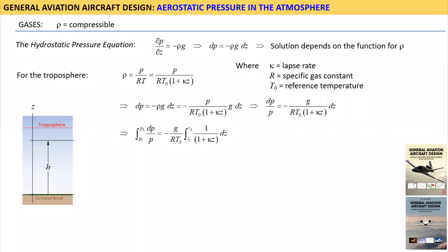Then we integrate both sides of the equal sign. Fully evaluating the left side of the equal sign leads to the natural logarithm difference shown. Evaluating the right side leads to the expression shown where the limits Z1 and Z2 have not yet been evaluated.